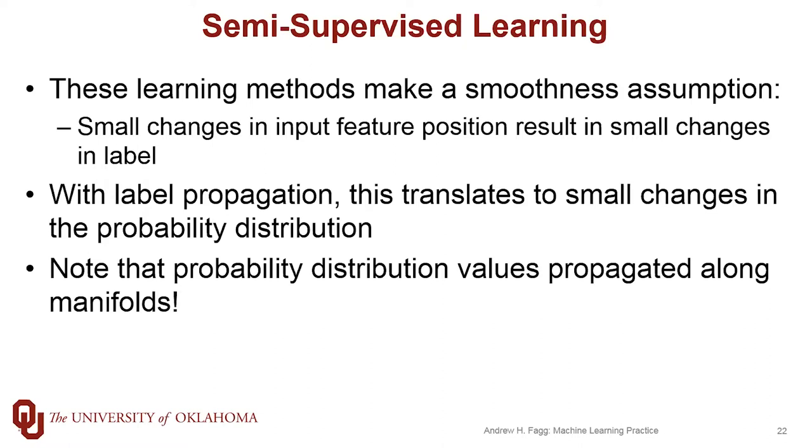And what I mean by this is that if we imagine taking a sample and moving it through the input feature space, making small changes to its position, then what that should translate into is small changes in the label that gets assigned to that point. With label propagation, where we were representing classes in terms of probability distributions, what this means is that as we move from one point to another, those probability distributions should not change very much. They might change if we have several conflicting classes nearby, but they won't change very much.